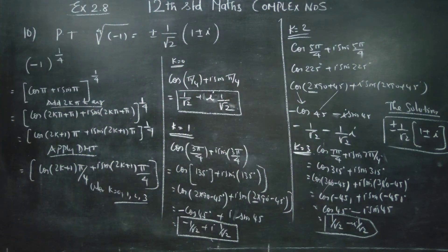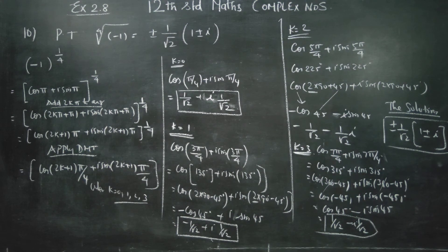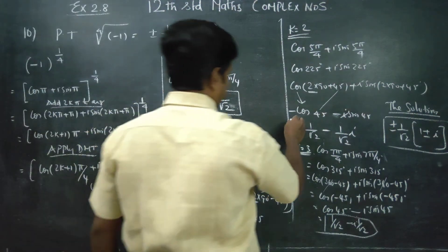So the four answers are: 1/√2 + i/√2, then −1/√2 + i/√2, then −1/√2 − i/√2, and finally 1/√2 − i/√2. The signs change for each answer. You can verify these are all the 4th roots of −1.